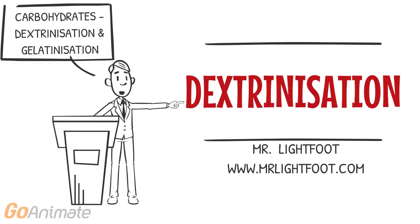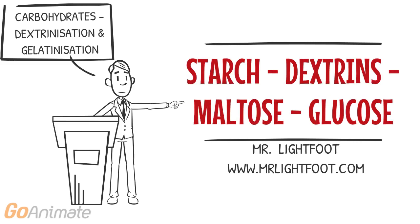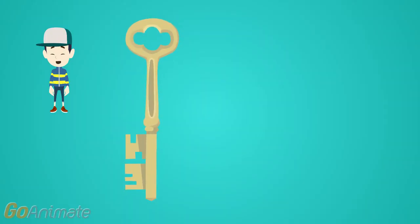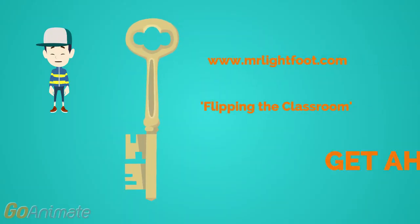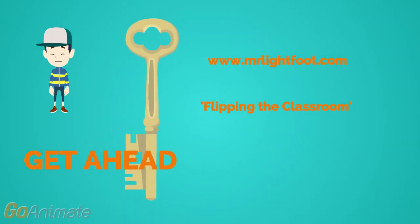Dextrinization of starches is the browning of starch. It involves the process of starch breaking down into dextrins. If the starch continues to break down, it becomes maltose, then glucose. As with proteins, these changes occur with the addition of heat, acids, and certain enzymes. See you in class for a deeper look at the functional properties of carbohydrates.